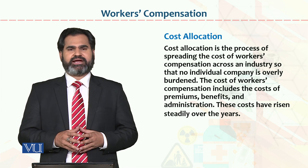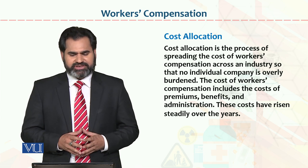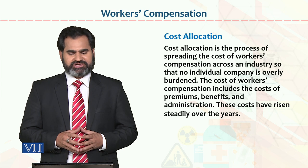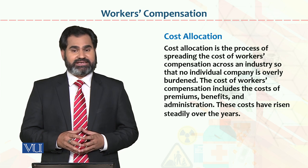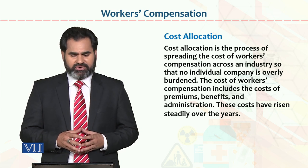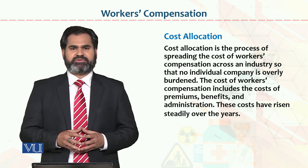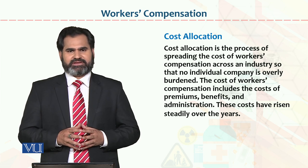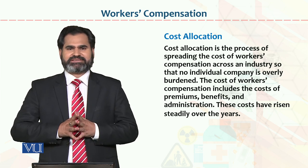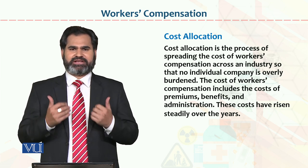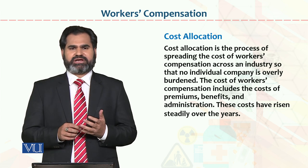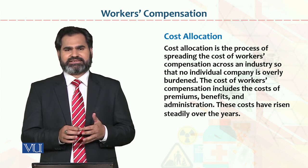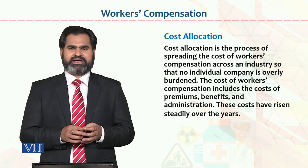Cost allocation is the process of spreading the cost of workers' compensation across an industry so that no individual company is overly burdened. For example, in Pakistan's textile industry, companies like Masao Textile, Sara Textile, Dow Textile, Bishmila Textile, and Hisan Yusuf Textile are all part of the same industry.